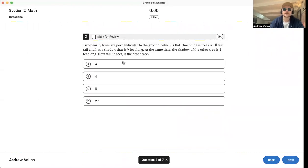Next question. Two nearby trees are perpendicular to the ground, which is flat. One of these trees is 10 feet tall and has a shadow that is 5 feet tall. Always draw things when you have potential to do that. At the same time, the shadow of the other tree is 2 feet tall. So we don't know the height of that tree, but we do know the shadow is 2 feet tall.